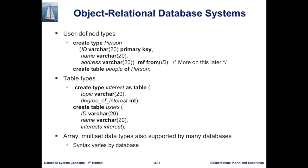The 'interests' attribute is defined as of type 'interest', which was defined earlier using 'CREATE TYPE interest' as a table with columns 'topic' and 'degree_of_interest'. So we have a sub-table inside the users table.